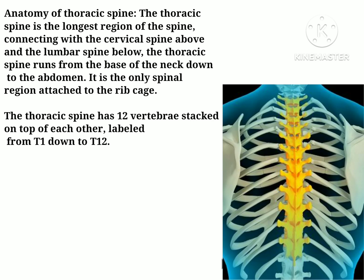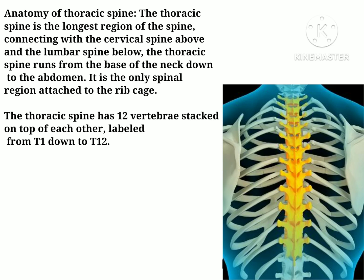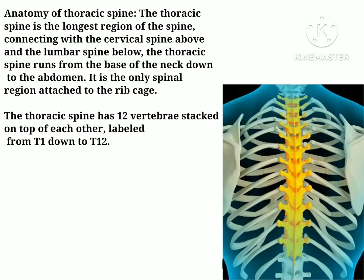Moving towards the anatomy of thoracic spine — as I have already discussed in my recent lecture on cervical spine, I mentioned the anatomy of the spine and explained that the bones present in the spine are called vertebras, and they are total 33 in number. Out of these 33 vertebras, the 12 vertebras in the middle of the spine are known as thoracic vertebras, or dorsal vertebras. The region of the spine where these vertebras are present is called the thoracic spine or dorsal spine, and these thoracic vertebras are named T1 to T12.